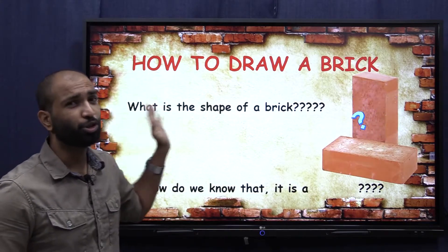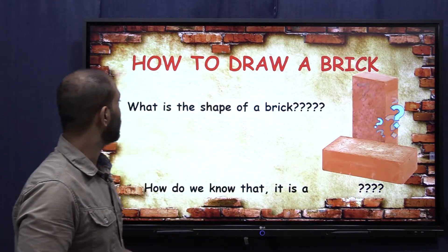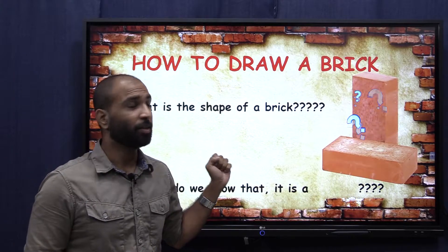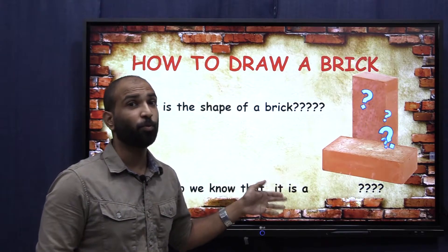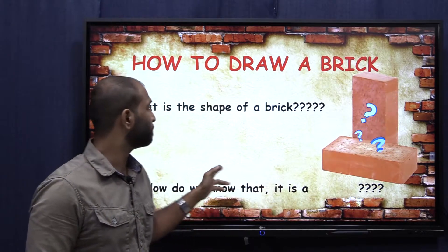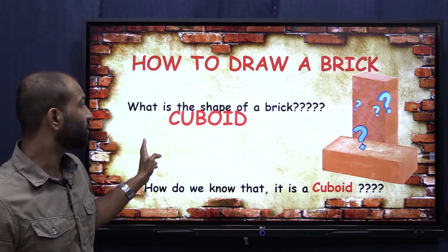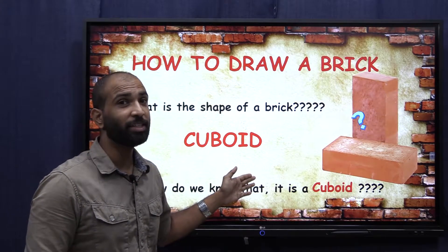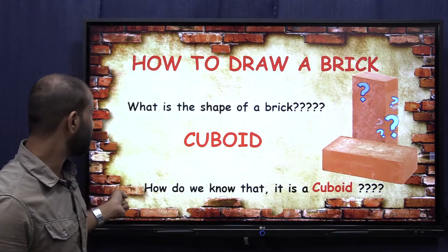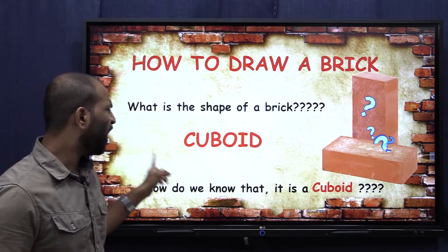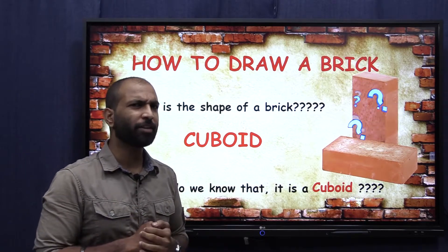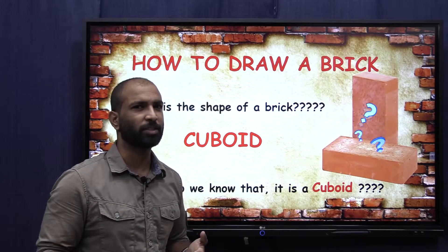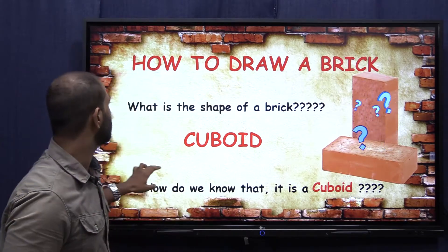How to draw a brick. Do you know what is the shape of a brick? It is cuboid — the shape of a brick is cuboid. A cuboid is having some properties and I will show you what they are.